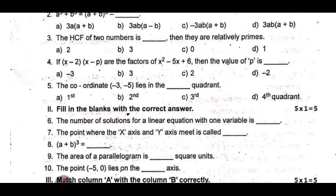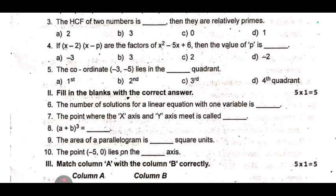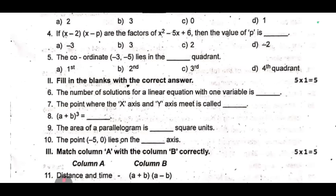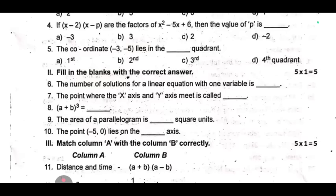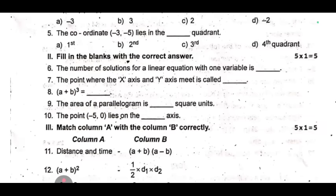The number of solutions for a linear equation with one variable is dash. Seventh one, the point where the x-axis and y-axis meet is called dash. Eighth one, (a + b)³ equals dash. Ninth one, the area of a parallelogram is dash square units. Tenth one, the point (-5, 0) lies on the dash axis.